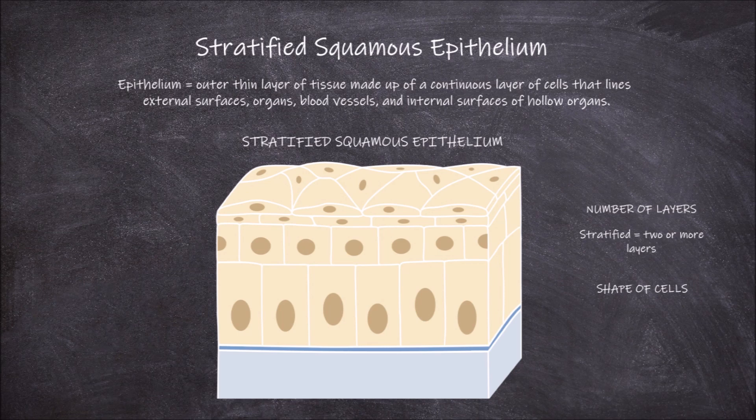When the epithelial cells are thin and flattened in shape, they are called squamous cells. Stratified squamous epithelium is made up of two or more layers of cells where the apical layer, or top layers of cells, are thin and flattened. The top layers are more flattened than the ones below them, and these lower layers may even be cuboidal or columnar in shape.